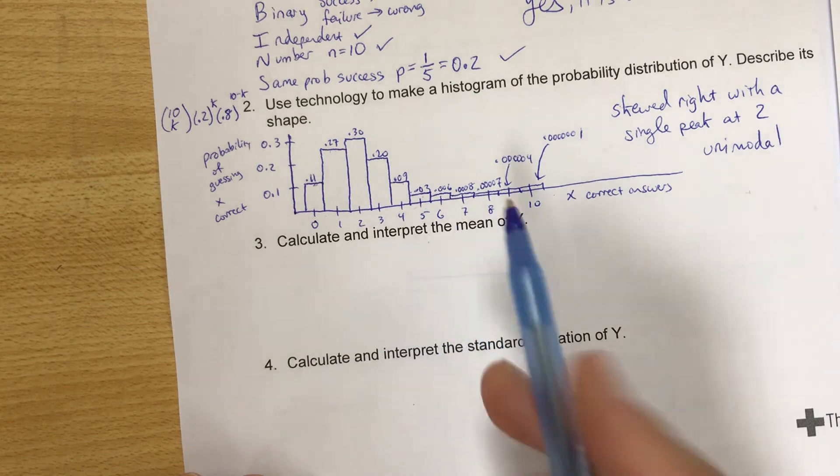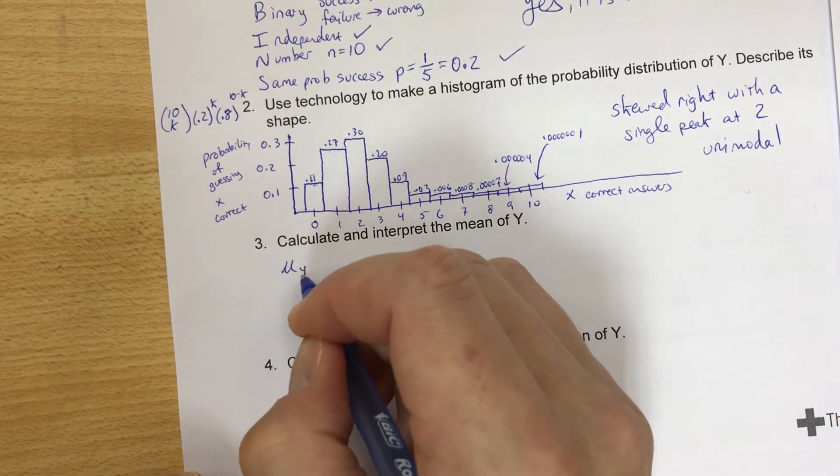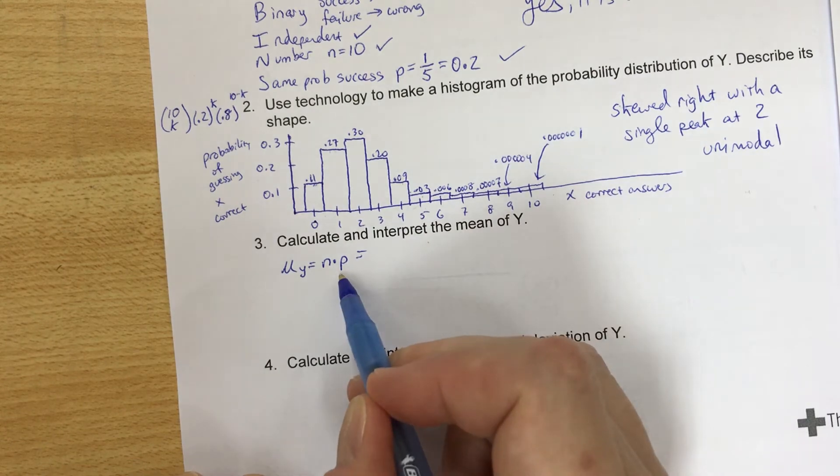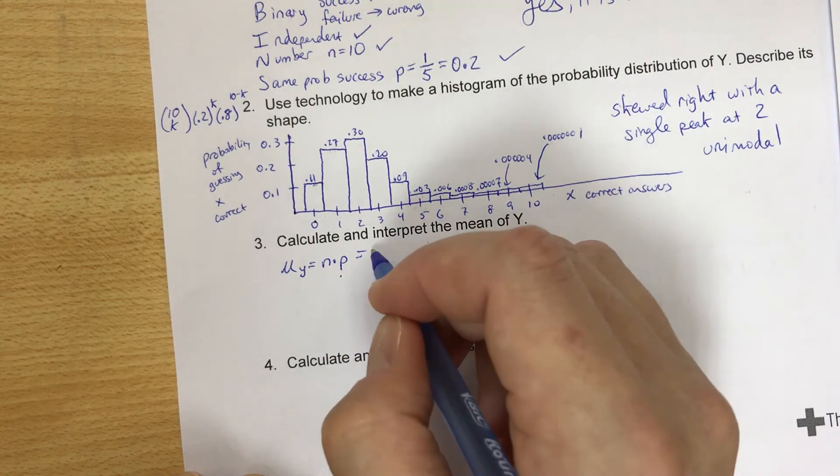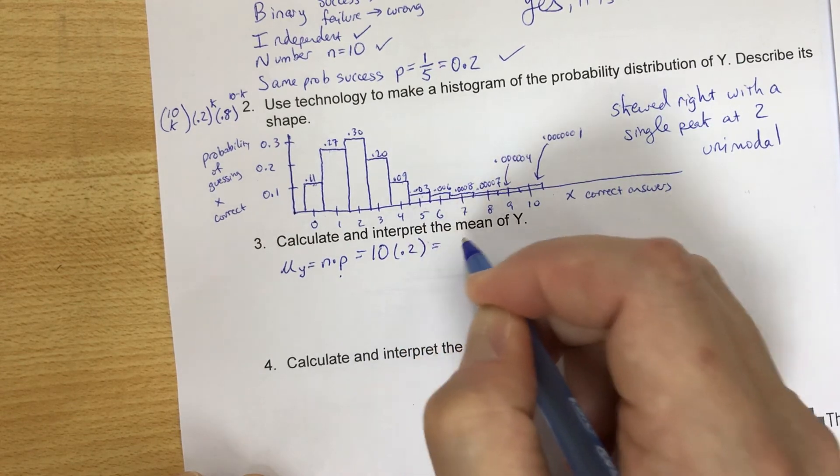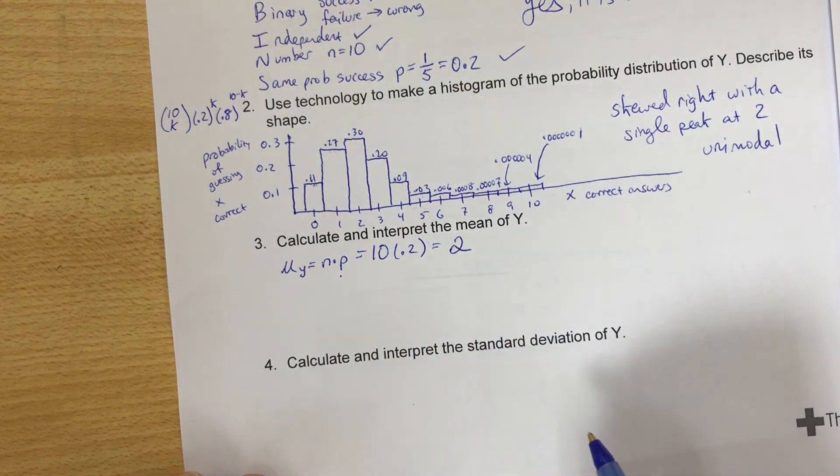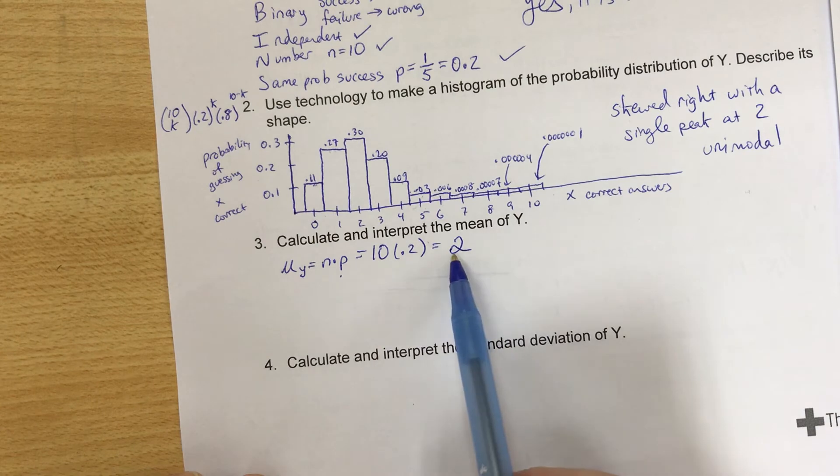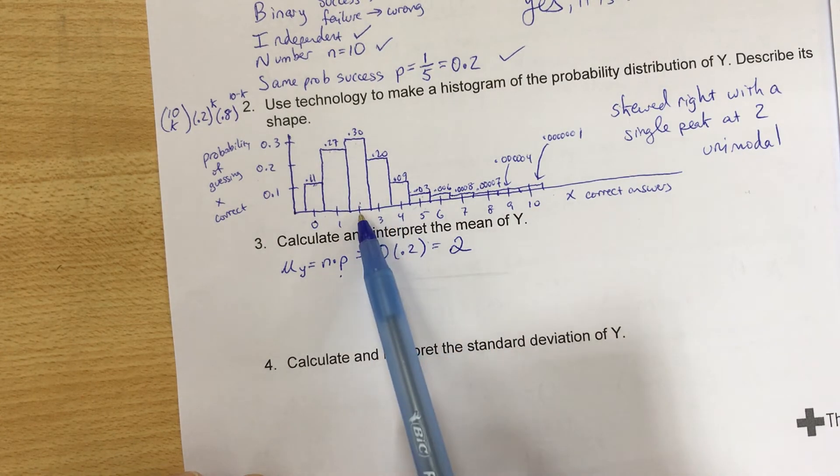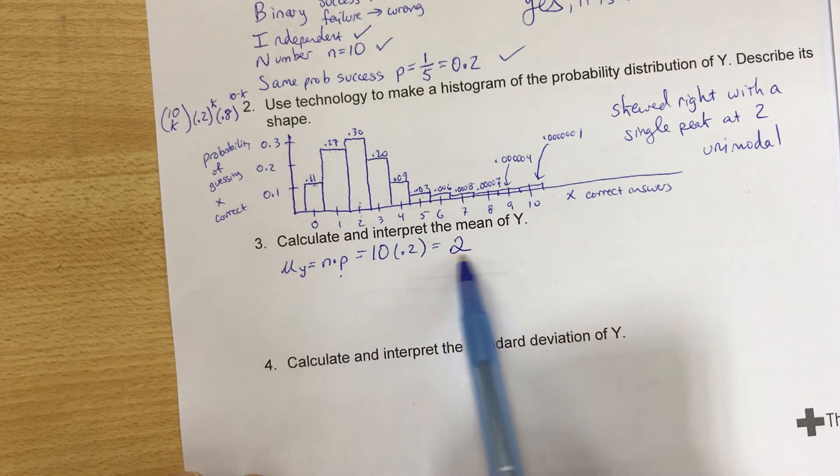Calculate and interpret the mean of Y. Well, the mean of Y is n times p, the number of trials times the probability. We did 10 questions. The probability of guessing correctly is 0.2. And so we get 2. Notice that the highest probability is that we get exactly 2 questions correctly. Okay, so this makes sense.